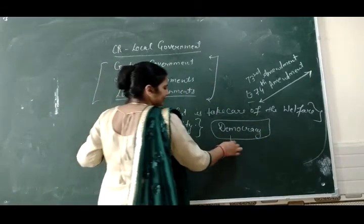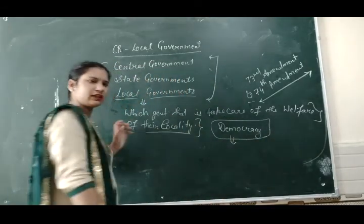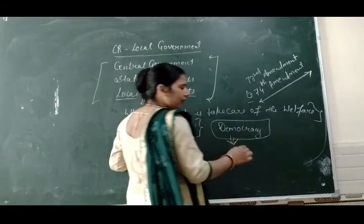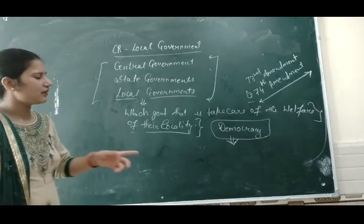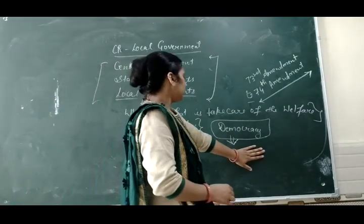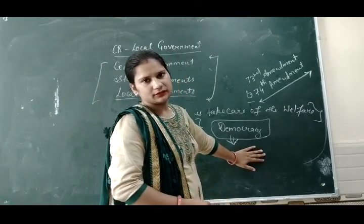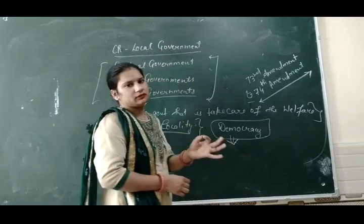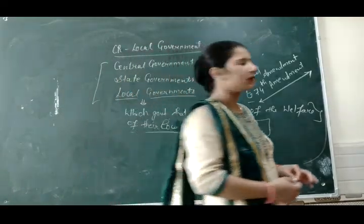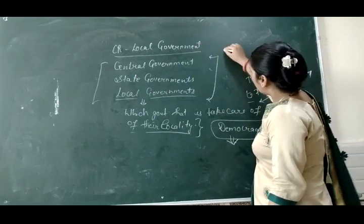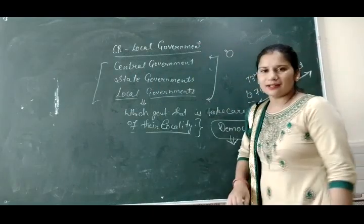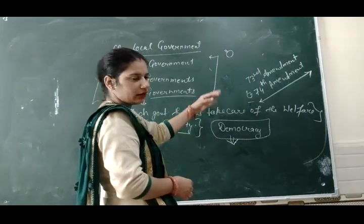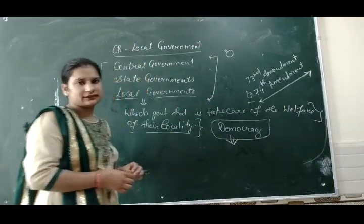What does democracy say? What is the basic point of democracy? Democracy means every person has the right to choose, or every person has the right to take participation in politics. Every person of the country — there should be no discrimination on the behalf of color, caste, and sex.